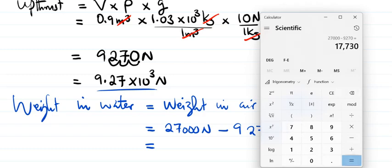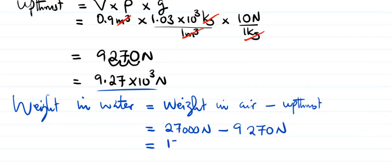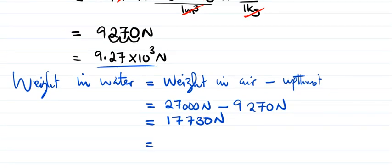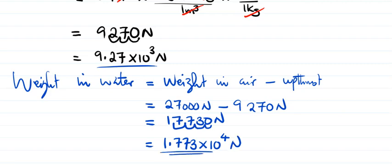27,000 minus 9,270 equals 17,730 newtons. In standard notation, that is 1.773 times 10 to the power 4 newtons. That is the weight of the block in seawater.